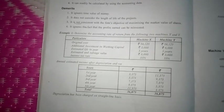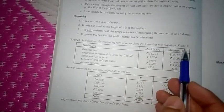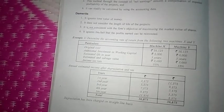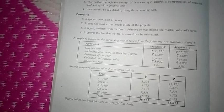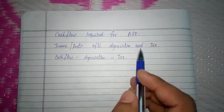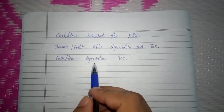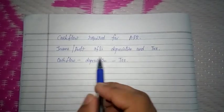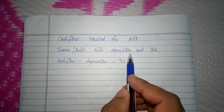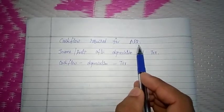Hello students. In this video let us understand how to calculate accounting rate of return when two machines are given. Before that, let us understand which cash flow is required to calculate the accounting rate of return or ARR. The cash flow required for ARR is income or profit after depreciation and tax. This can be calculated by deducting depreciation first, then tax, to get income or profit after depreciation and tax.